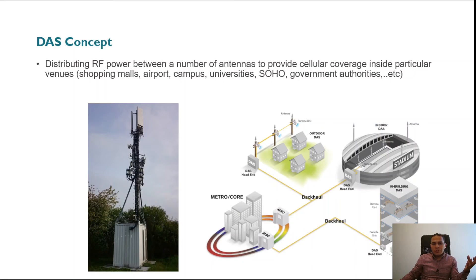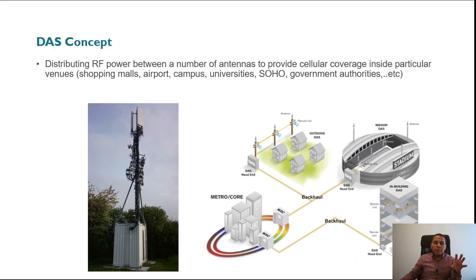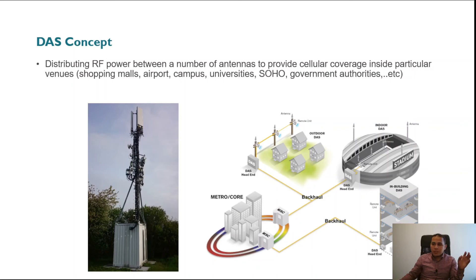A third important challenge during DAS deployment is RF interference. You need to mitigate or minimize RF interference and make sure your frequencies are clear of interference. You also need to ensure your passive equipment does not generate passive intermodulation (PIM), and that the PIM rating of your DAS components meets the standard within the defined limit.